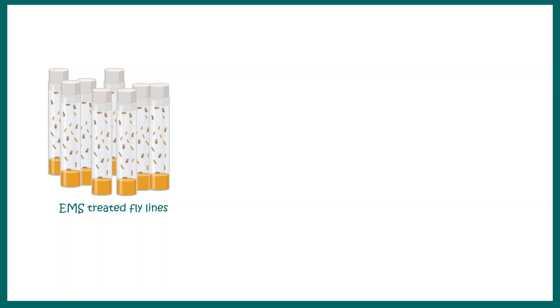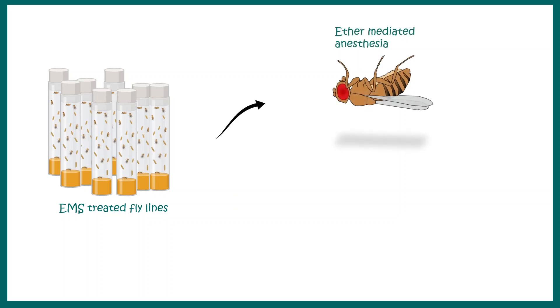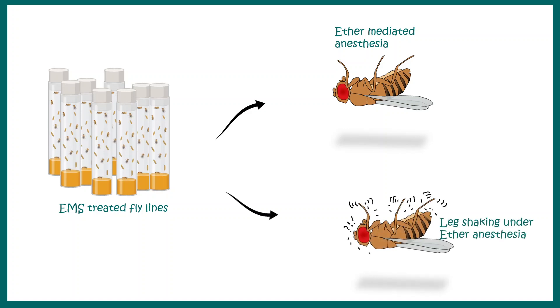Here is a cool story about the discovery of voltage-gated potassium channels. Scientists looking at fly mutants treated with EMS reasoned that a mutation in potassium channels would lead to hyper-excitability. Normally a fly is anesthetized under ether exposure and does not move its legs, but certain mutants from the screen showed hyper-excitability and shook their legs even under ether anesthesia. These were named shaker mutants — and that is the discovery of the KV1 family of voltage-gated potassium channels: a simple but elegant experiment.